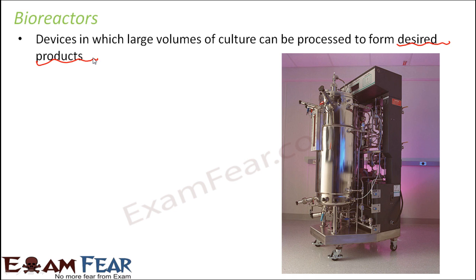The desired products include useful enzymes and medicines. To produce them, we need to cultivate a large volume of organisms - such as plants, animals, or microbial cells - in these devices. Large space is provided so a lot of them can be cultivated and a good amount of desired products can be formed. Appropriate environment is provided for optimal growth and metabolic activity of the organisms.